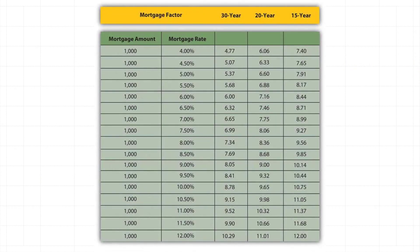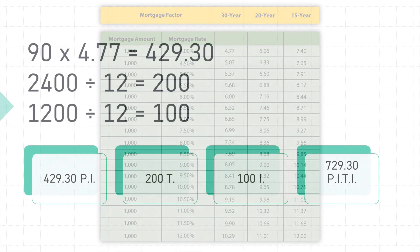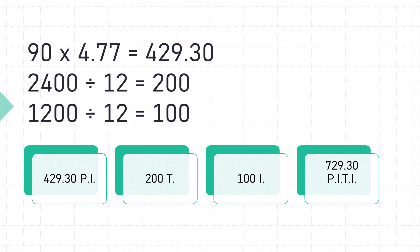Let's find the loan factor for a 4% APR 30-year term to determine principal and interest. The factor is 4.77. With a $90,000 loan amount, we drop the three zeros: 90 times 4.77 equals $429.30 for principal and interest. Some exam questions may only ask for principal and interest — in that case you'd be done. However, this question asks for P-I-T-I, so we continue.